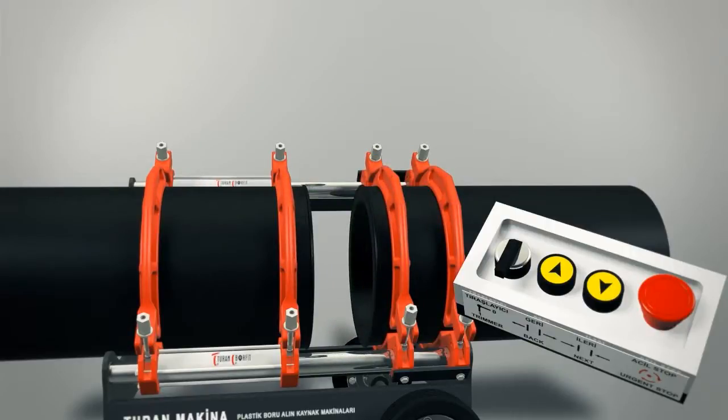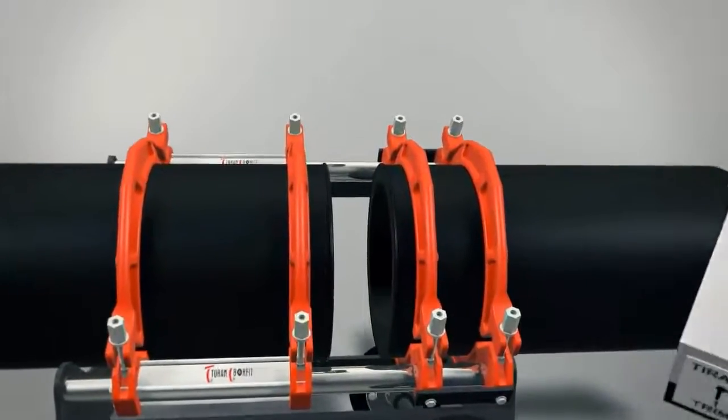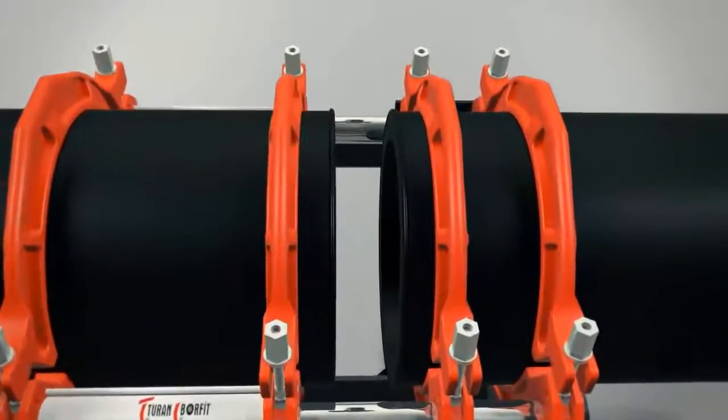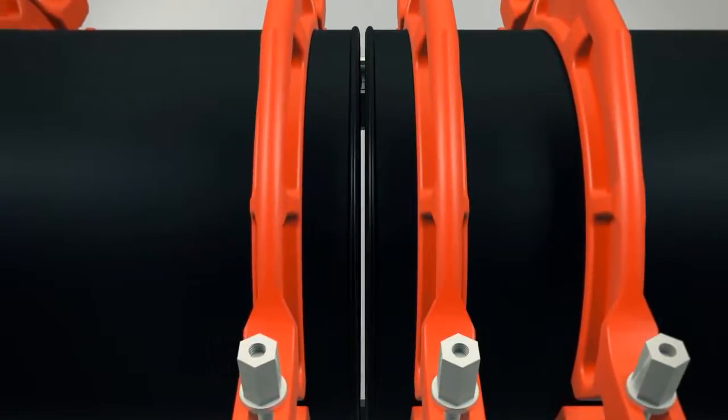Press ahead walking button of machine continuously and join pipes butt to butt. When melted surfaces of pipes are approached each other, you will have reached welding pressure by pressing ahead walking button intermittently.